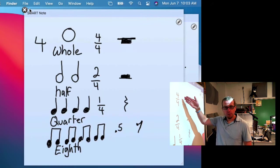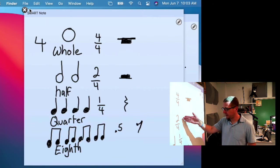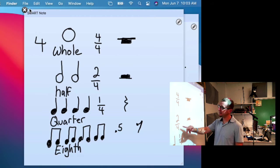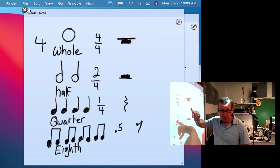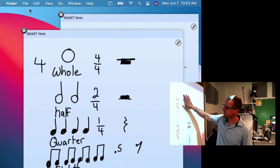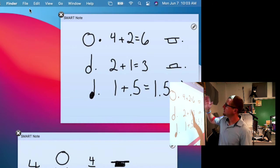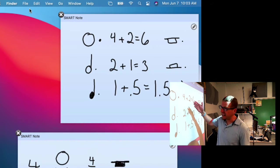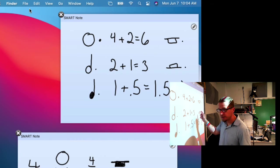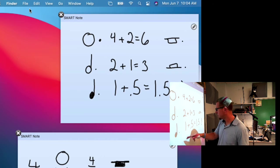We have four beats for a whole note, two beats for a half note, one beat for a quarter note, and then half a beat for an eighth note. And that's all because it's all out of four. Four is our denominator. Then our rests get the same value. Dotted just adds half. So four plus half of four equals six, two plus half of two equals three, and then one plus half of one equals one and a half.